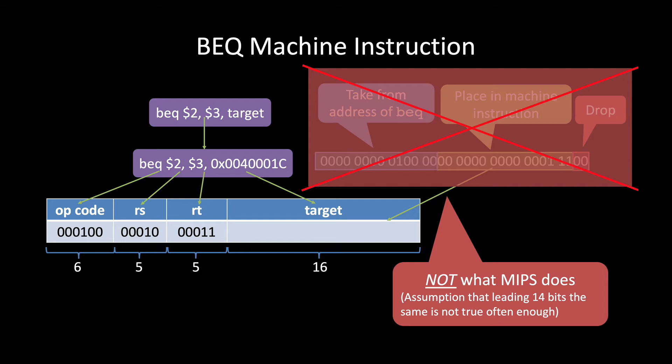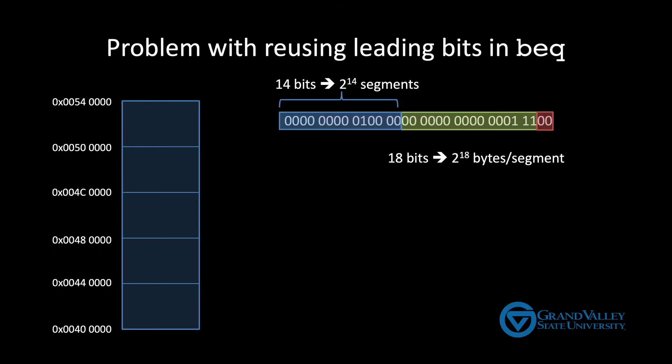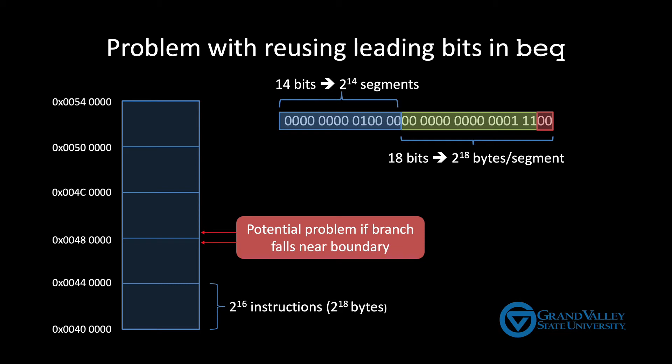Assuming that the first 14 bits are the same for both the target address and the branch instruction itself, partitions the address space into 2 to the 14 segments containing 2 to the 18 bytes each. Since each instruction is 4 bytes, that means each segment holds 2 to the 16 instructions. If a branch and its target happen to both be in that same segment, everything works as planned. But what happens if a branch instruction happens to fall near one of these boundaries? Where the branch instruction is in one segment, but the target is in the next? The assembler would have to watch for this situation and write the code differently to handle it.